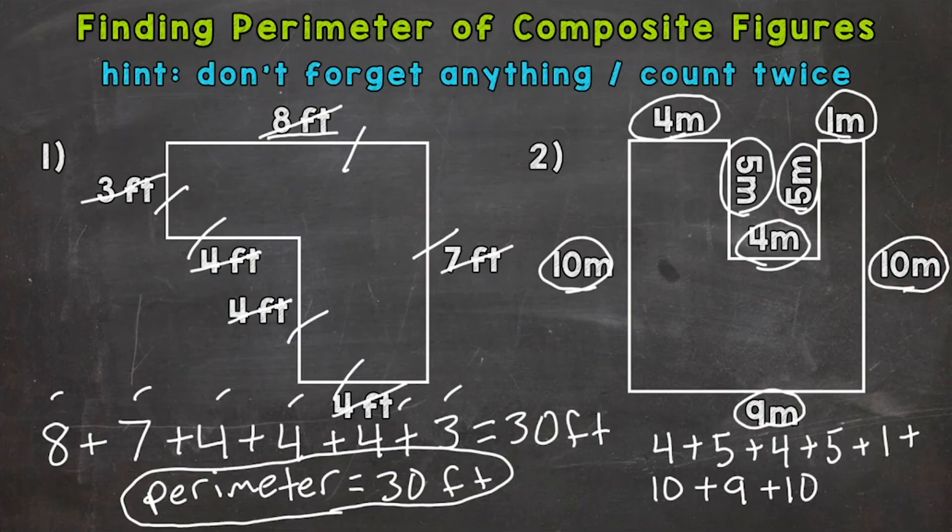Let's double-check everything. We have one, two, three, four, five, six, seven, eight sides. And we have one, two, three, four, five, six, seven, eight measurements.